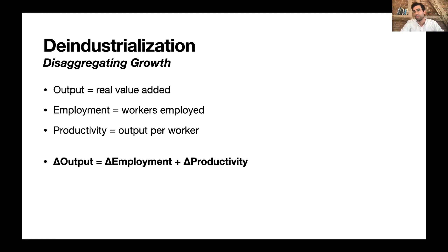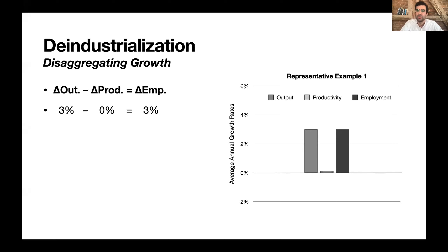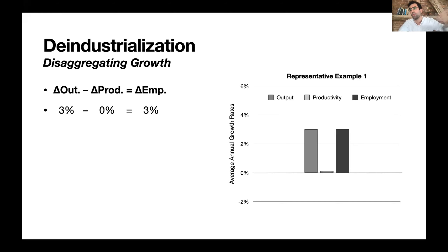I use a stylized equation: the change in output equals the change in employment plus the change in productivity — it's actually on the first page of the Wealth of Nations. As an example: imagine a car factory where output has been growing by 3% per year but productivity isn't growing at all. In that case, employment would have to be growing by 3% per year to explain the output growth.